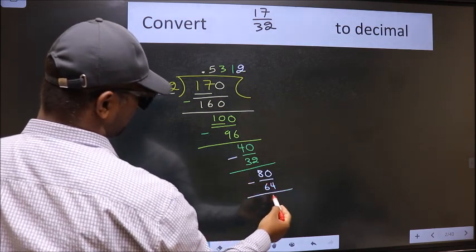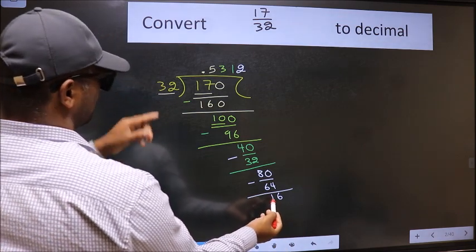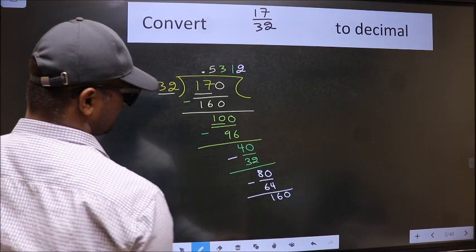Now we should subtract. We get 16. 16 is smaller than 32 and we already have the decimal. So directly take 0.